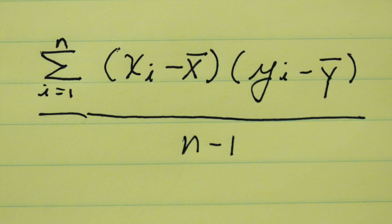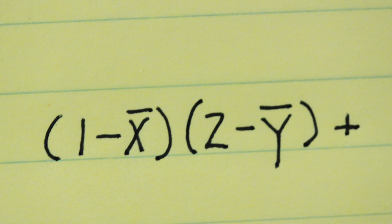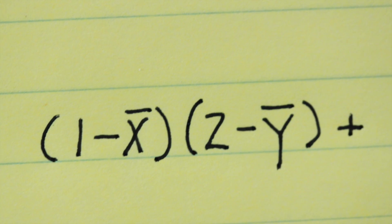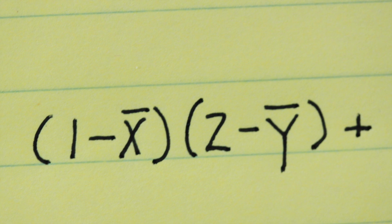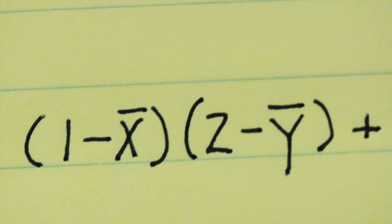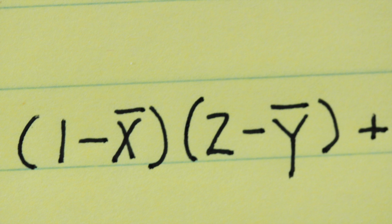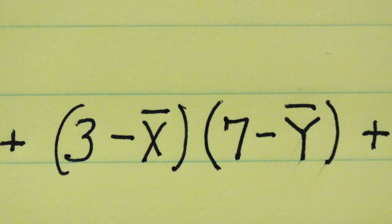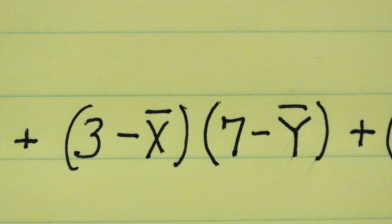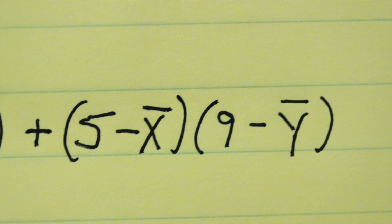We will now plug those back into this formula, both the individual numbers and the averages. So we start with our first point, 1 and 2, subtract the average x, average y. We'll then look at our second point, 3 and 7, again subtracting the averages. And the same for our final point.